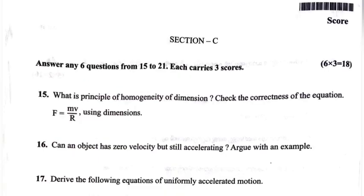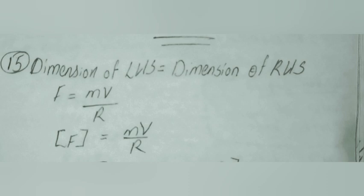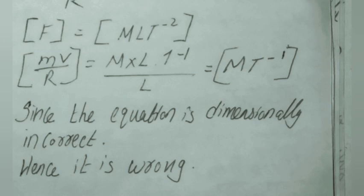Question 15: What is principle of homogeneity of dimension? Check the correctness of the equation F is equal to mv divided by r using dimensions. Answer: Dimension of LHS is equal to dimension of RHS. F is equal to mv divided by r. Put square bracket on both sides. F is equal to m1 l1 t minus 2 and mv divided by r is equal to m1 into l1 t minus 1. LHS and RHS are not same since the equation is dimensionally incorrect.